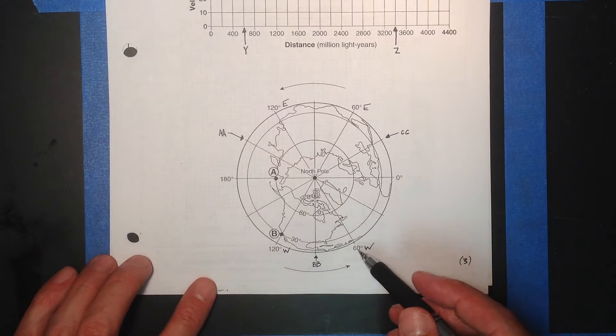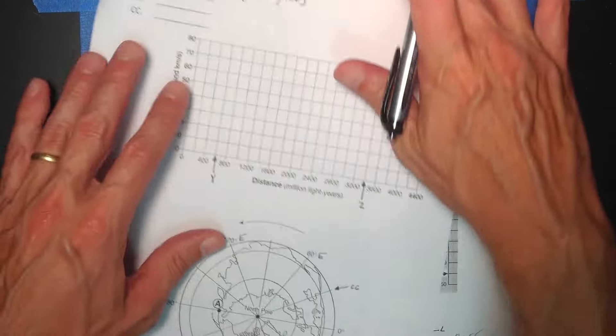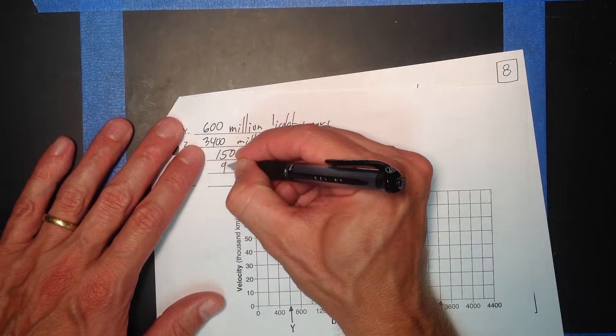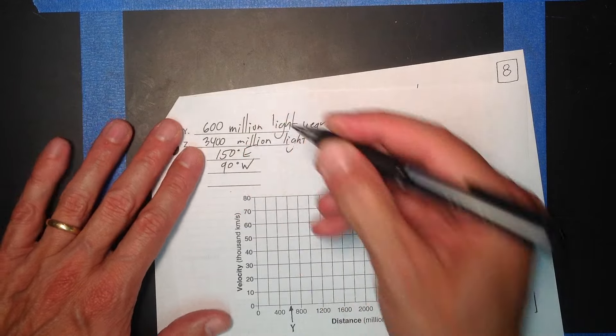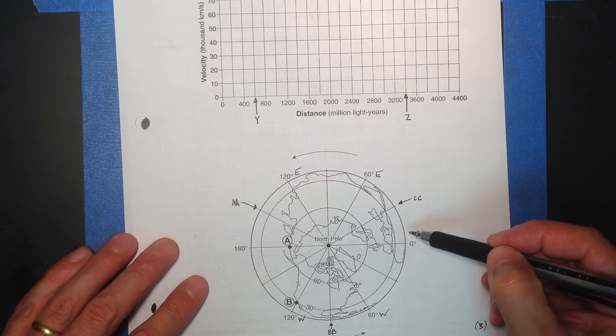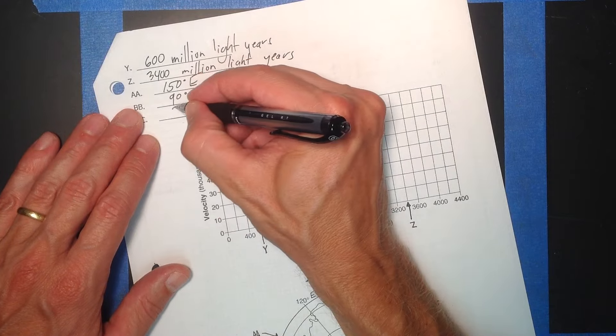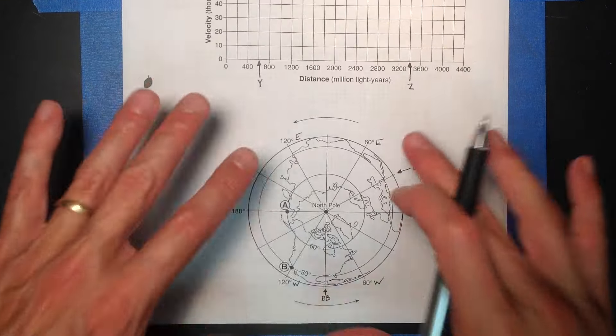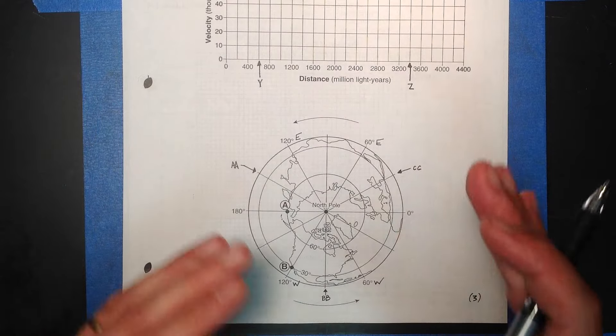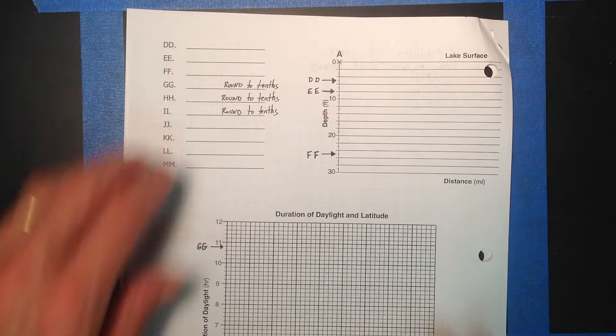And BB. So these go by thirties again. That's 60 degrees west, 120 degrees west. This is going to be 90 degrees west. And CC is here. So again, this is going to go by 30. So this is 30 degrees east. And it's confusing looking down at earth like this. We often have to really, in this class, see what we're looking at, how we're looking at it before we really start diving in.